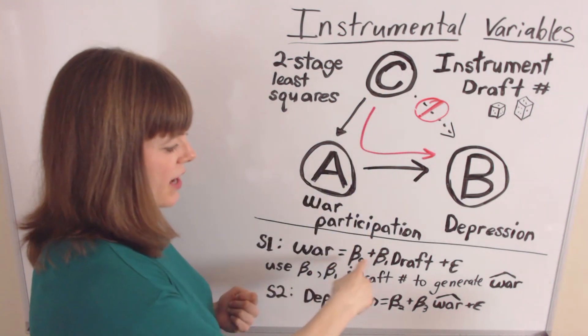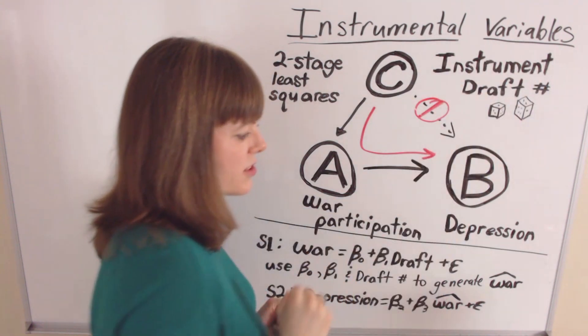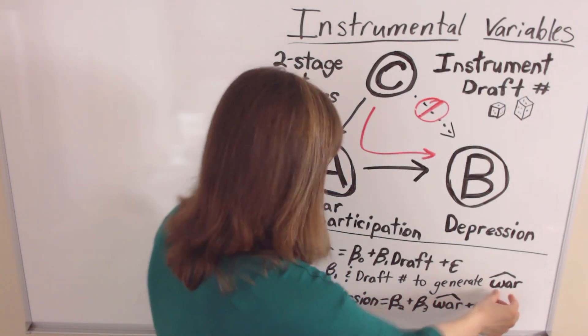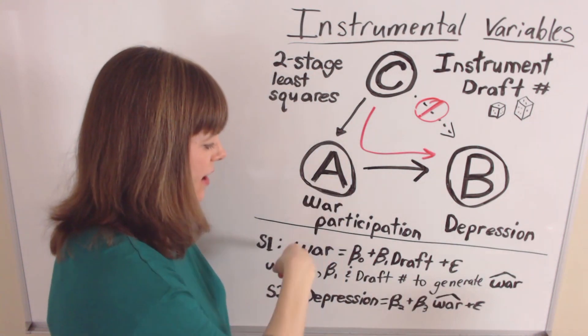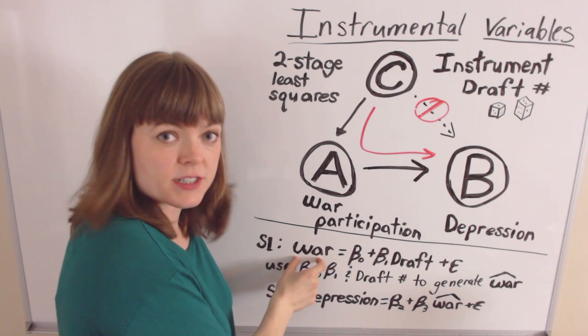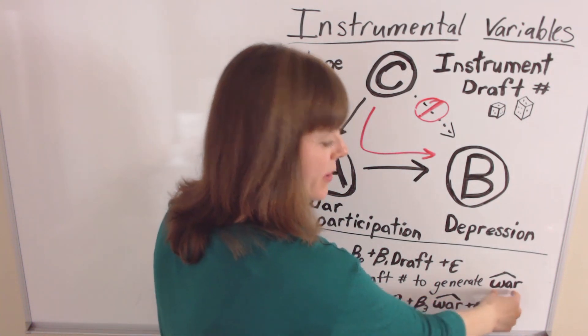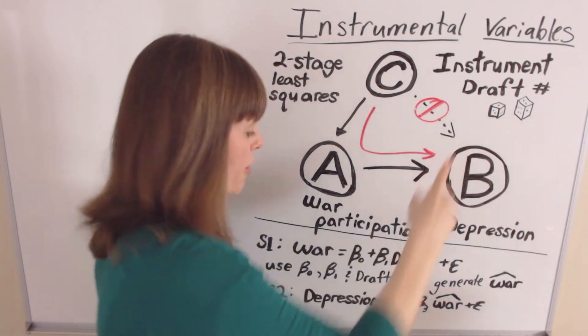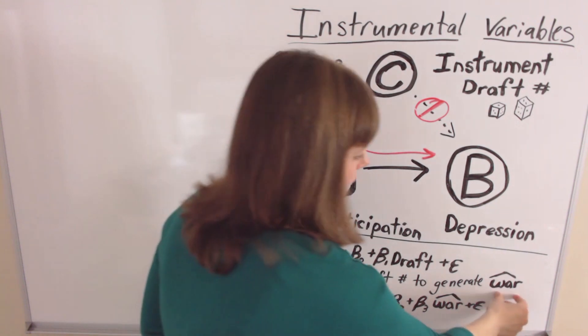And using beta-naught, beta-one, and data from our draft numbers, we come up with war-hat. And war-hat is very different from war. War is actual data about whether or not these people went to war. War-hat is a prediction of the probability that this person went to war based only on their draft number and these coefficients, beta-naught and beta-one. That's what war-hat represents. We've essentially gotten rid of actual war participation, and we only have this random element, the instrument, predicting war-hat.